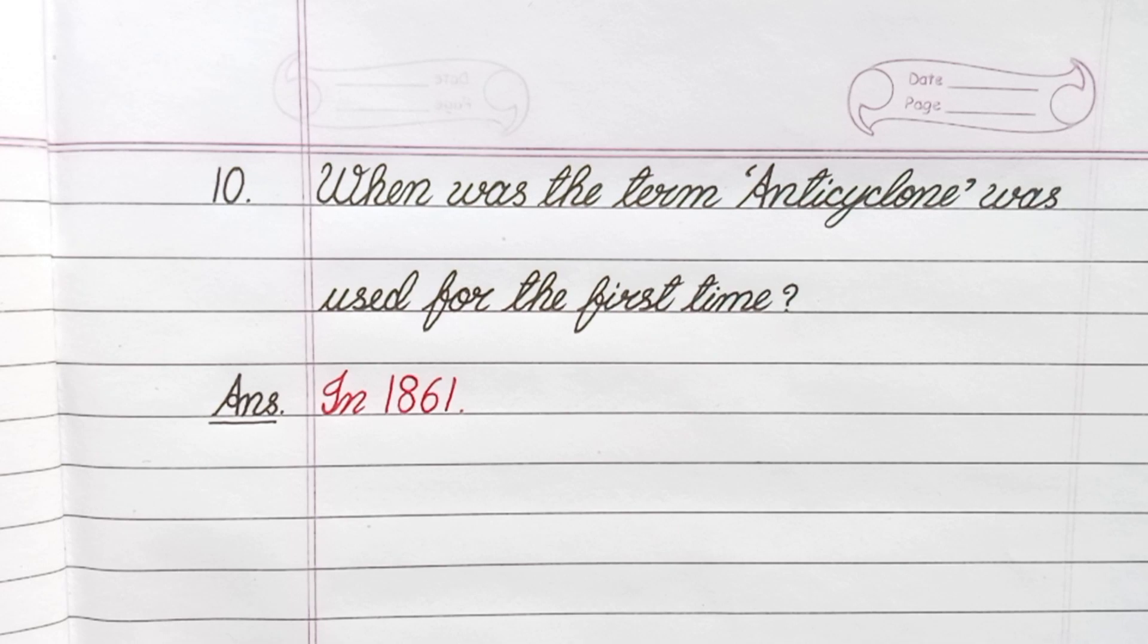Question number 10. When was the term anticyclone was used for the first time? Answer. In 1861.